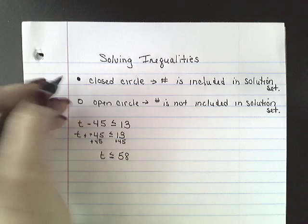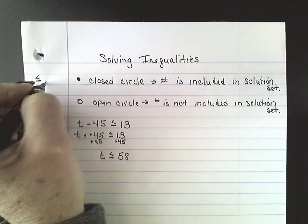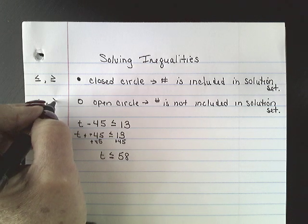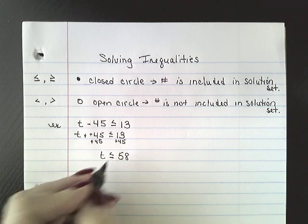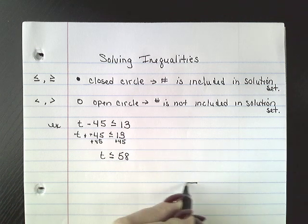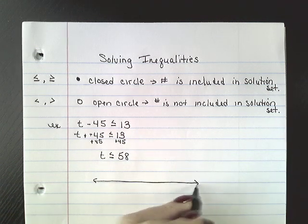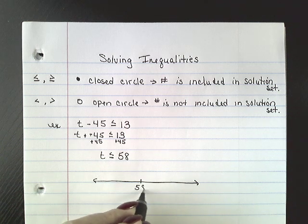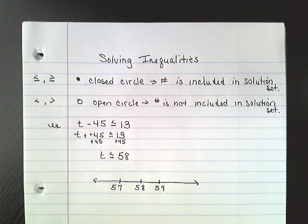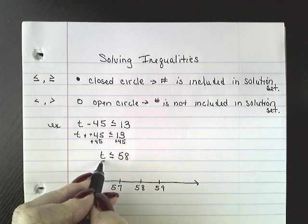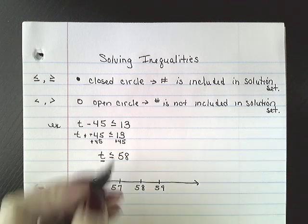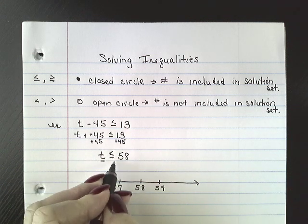Now, the closed circle is used when it's less than or equal to, or greater than or equal to. The open circle means it's less than or greater than. Here we have less than or equal to, so our graph is going to have a closed circle. I'm going to put 58 on the number line — after 58 comes 59 and before 58 comes 57. Always try to solve inequalities leading with your variable; if you lead with your variable, graphing is going to be easy because you follow the symbol.